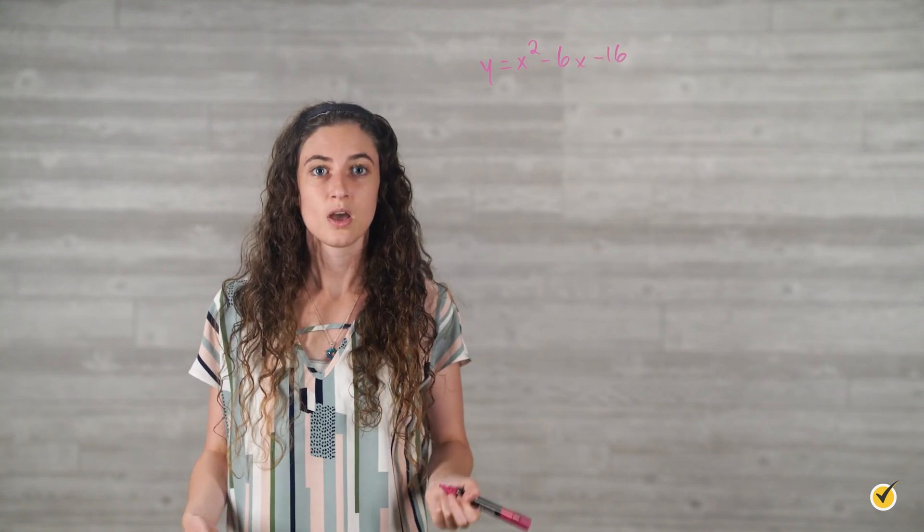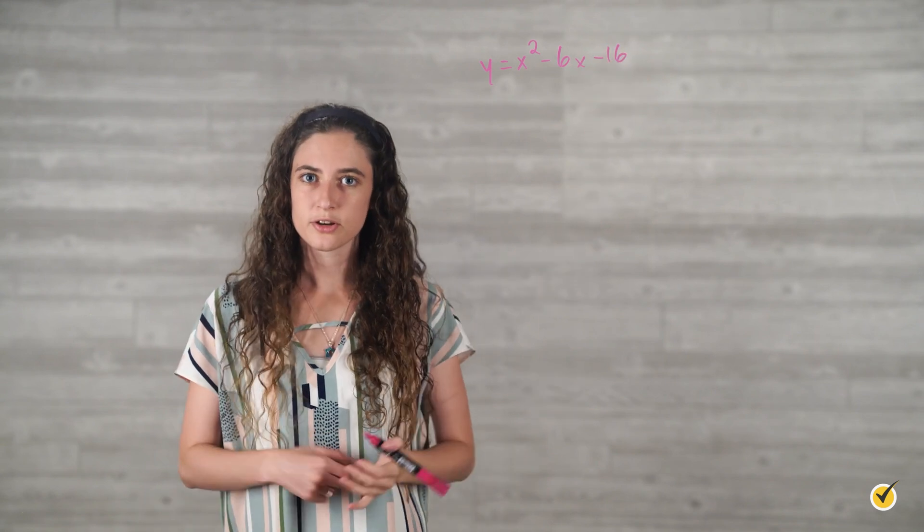Now it's your turn. I'm going to give you a quadratic function and you need to factor it, identify the coordinates for its x-intercepts, identify the coordinates for its vertex, and graph it. The quadratic function is y equals x squared minus 6x minus 16. Pause the video here and try it yourself.